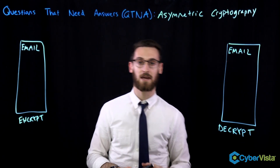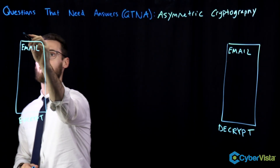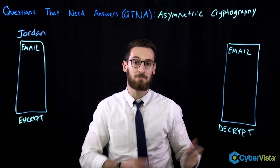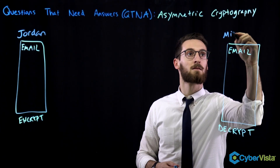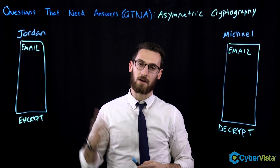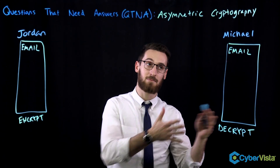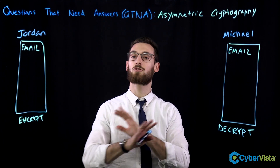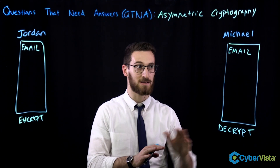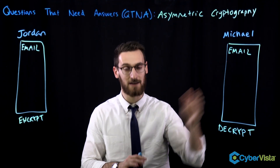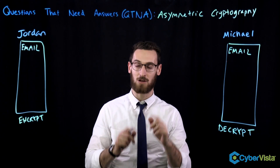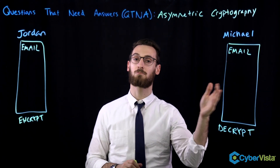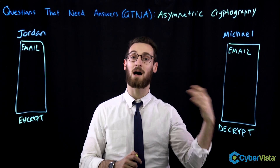So let's look at how this actually plays out. Say we have two communicating parties: we have Jordan, and they want to send an encrypted email to their friend Michael. If Jordan wants to send an email to Michael that is encrypted and nobody else in the entire world except Michael can read that email, Jordan is going to encrypt the email with Michael's public key.